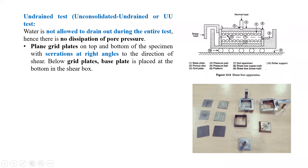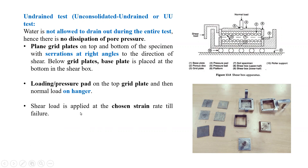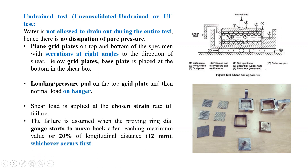During shearing, the bottom part is fixed and the upper part moves. The serration plate is kept at right angles along the direction of shear. Below the grid plates, the base plates are kept. The loading or pressure pad is placed on the top grid plate, and then the normal load is applied on the hanger. In the undrained test, porous plates or porous grid plates are not used — only plain metal grid plates are used.